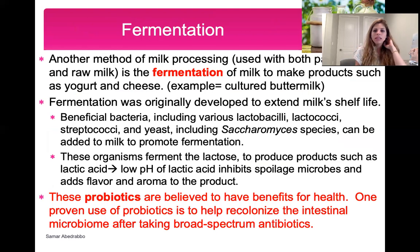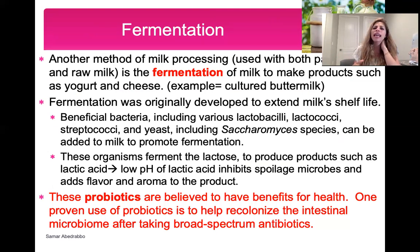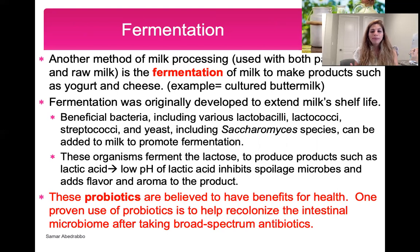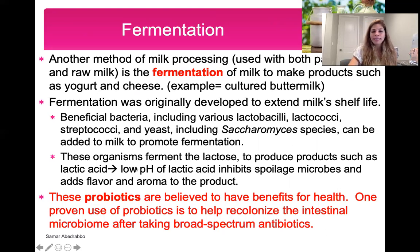The next milk to talk about is fermented milk. You can make fermented milk using either raw milk or pasteurized milk as a starting point. Fermented milk is basically milk that has good bacteria added to it — yogurts, cheeses, and cultured buttermilk are examples. Scientists and factories add beneficial bacteria such as Lactobacilli, Lactococcus, Streptococcus, yeast, and Saccharomyces. These promote fermentation, and byproducts of fermentation — like lactic acid — make the food taste better. The high acidity of lactic acid also inhibits many spoilage organisms. These are what we consider probiotics.